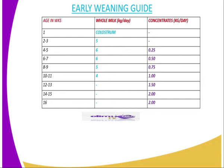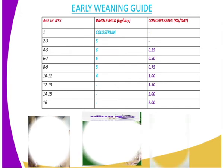On week eight, there is five kg of whole milk and 0.5 kg of concentrate. From weeks eight to nine, you gradually reduce the amount of milk and gradually increase the amount of concentrate until week 12. At week 12, you are supposed to wean the calf — you no longer feed it on milk but instead feed it entirely on concentrate.